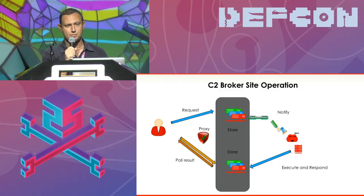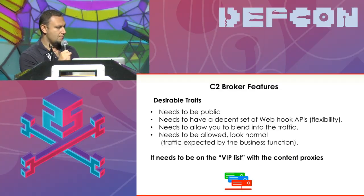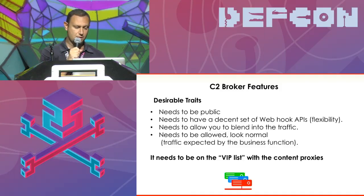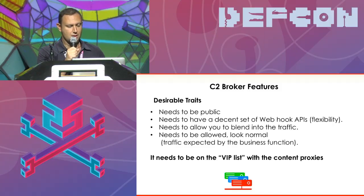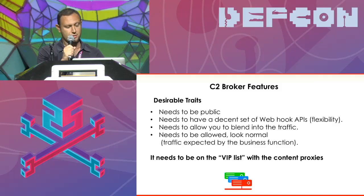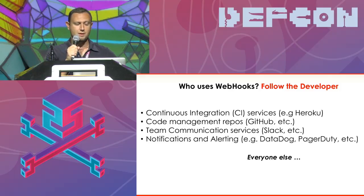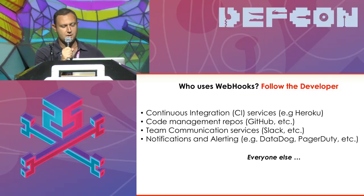The C2 broker site operation is as follows: a request across some site invokes a hook onto a third party. The third party executes the request and comes back with a response through the C2 broker, and then the client pulls that response off of the C2 broker site. C2 brokers are not created equal — what we need is that it must be obviously public, flexible so that webhooks can actually work through it, findable on the VIP list with proxies, and it needs to blend into the business function of the specific organization. So again, who uses webhooks? Let's follow the developer: continuous integration, code management, communication services, alerting.